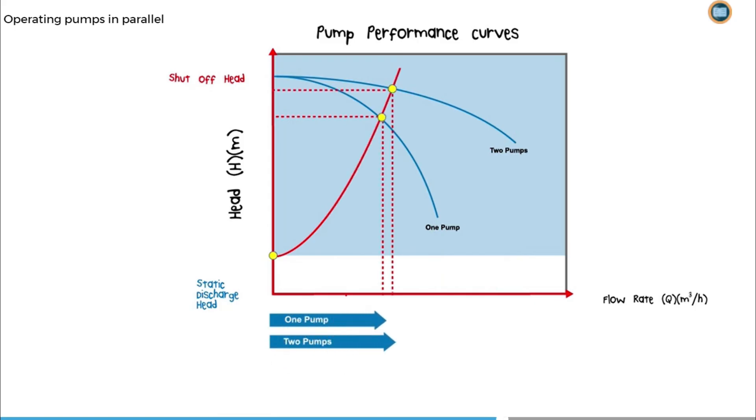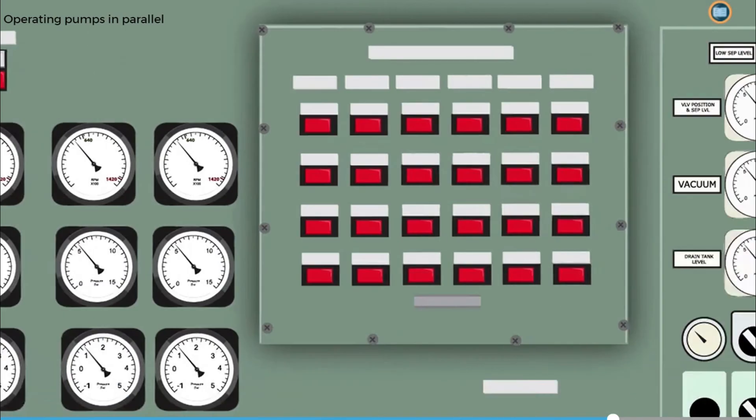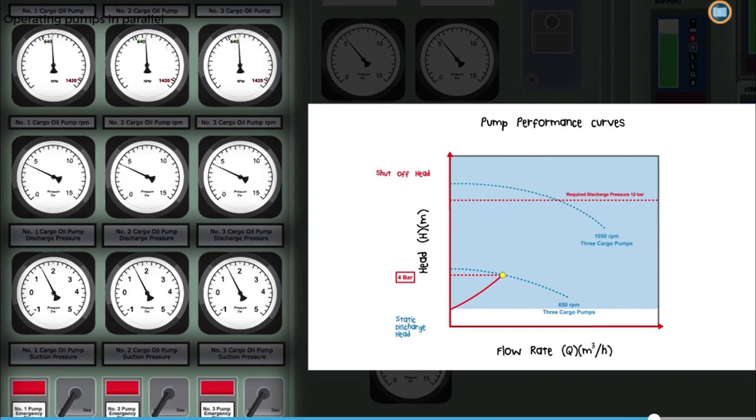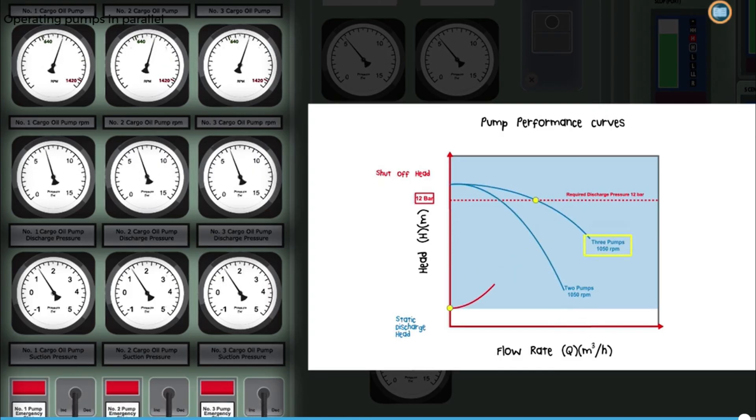When there are high shore resistance conditions, operating two pumps only increases the overall flow rate slightly more than if one cargo pump is running, but the discharge pressure increases significantly. When operating three pumps, the increase in flow is hardly noticeable, but again, the discharge pressure increases significantly. Under these high shore resistance conditions, paralleling three cargo pumps requires careful control to match the pump discharge pressures. When operating in parallel, the rotational speed of each pump should be increased in steps of 50 or 100 RPM. Between each step, the discharge pressures should be seen to settle before increasing any further. When possible, it is always more efficient to operate two pumps at or near full rotational speed rather than using three pumps at a reduced RPM.